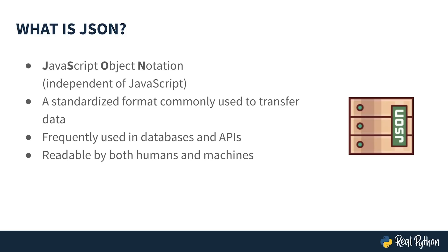JSON is frequently used in databases and APIs. We can use it when we need to retrieve information from our own servers, or even an API that exposes a public endpoint. As we'll see in a moment, many APIs return data in JSON format, and we can use that data within our own programs. JSON is popular because it's easy for both humans and machines to read.